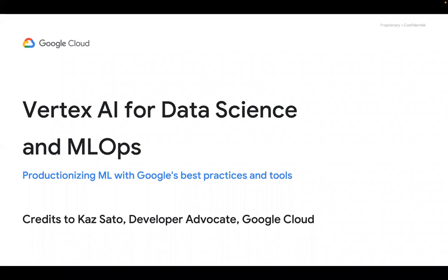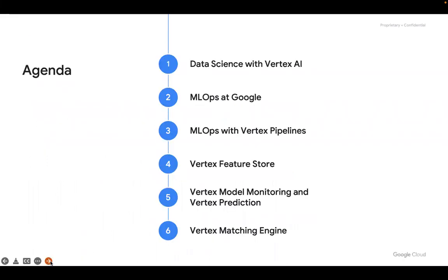Today we are going to see a quick overview of Vertex AI, which is mostly used for data science and MLOps. This is a product by Google which is integrated as part of Google Cloud Platform, helpful for productionizing ML along with Google's own best practices and tools. This slide is prepared by Kash Sato, a developer advocate in Google Cloud, and the contents belong to them.